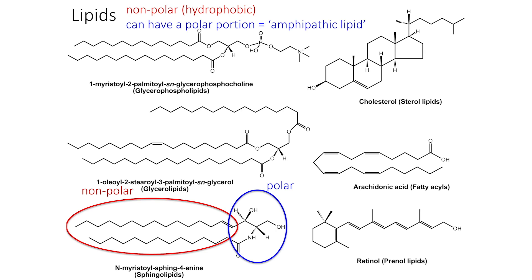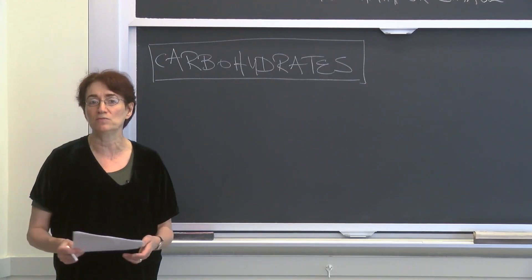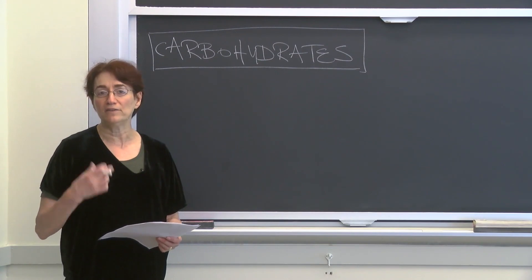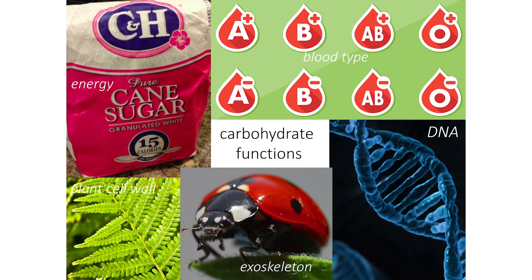Let us move on now to carbohydrates, the next major class of macromolecules. Carbohydrates do lots of cool things — they are what gives you your blood type, and they are also a way that energy is taken in. They're a quick form of energy; runners will have carbohydrates right before a marathon because that is available energy. They build the cell walls of plants and the exoskeletons of insects, and they are an essential part of DNA.